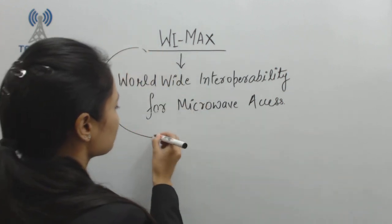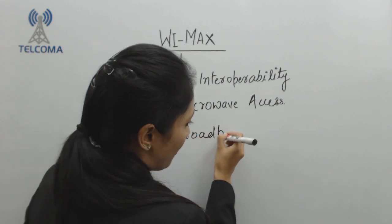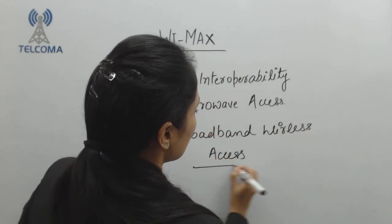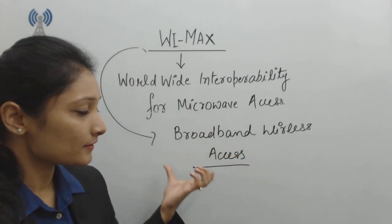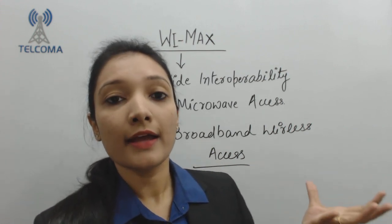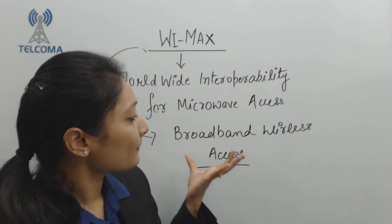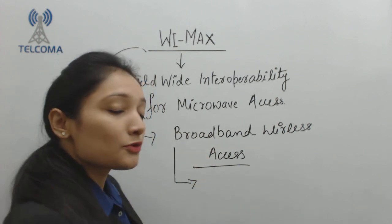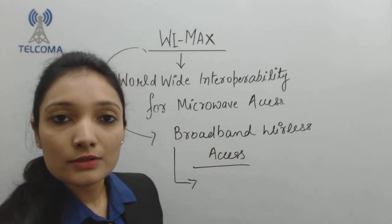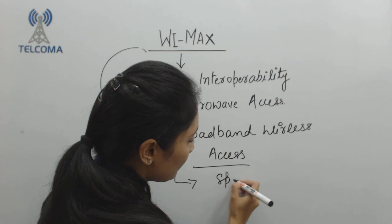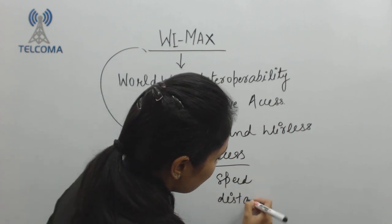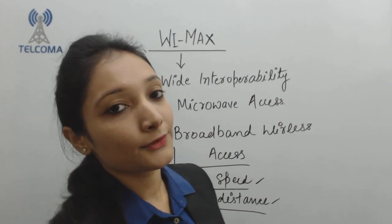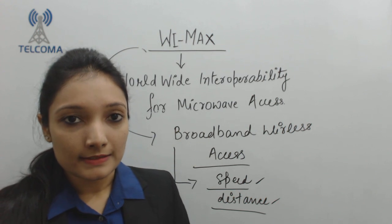WiMAX is a broadband wireless access, which basically refers to a wireless method of accessing the internet. This technology is supposed to deliver data services at increased speed and distance. WiMAX falls under the category of the fourth generation of technologies and has improved features compared to existing wireless communication standards.